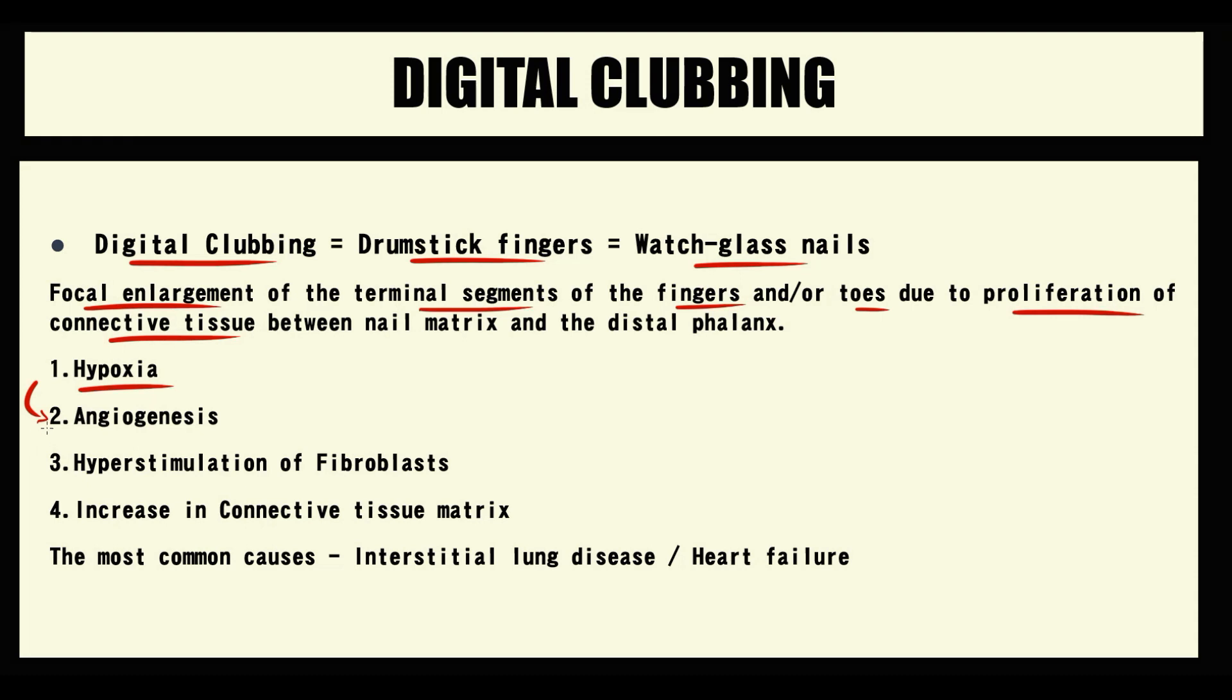Extensive angiogenesis provokes hyperstimulation of fibroblasts in nail tissue. Fibroblasts in a hyperreactive state begin to make a lot of connective tissue. This overproduction of connective tissue causes digital clubbing.